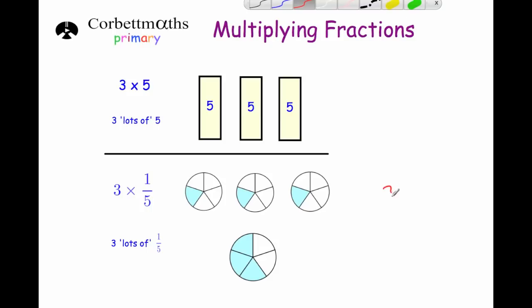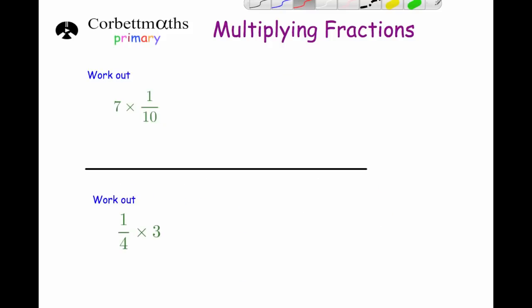You might notice a shortcut there: if you're multiplying 1 fifth by 3, it's just 3 fifths. Let's have a look at some examples. Our next example is 7 times 1 tenth — 7 lots of 1 tenth would be 7 tenths.